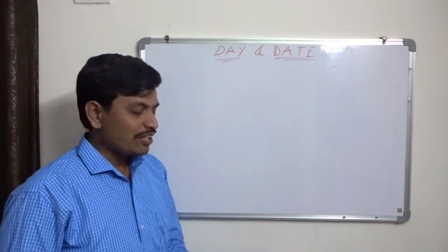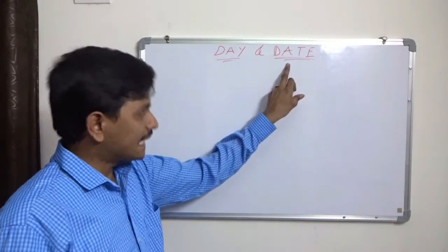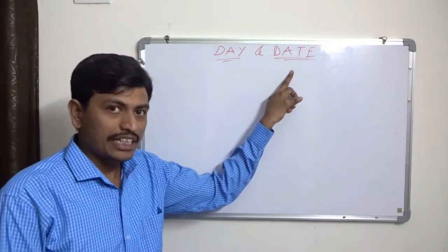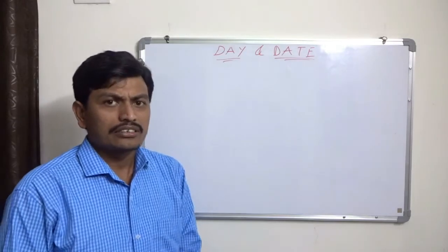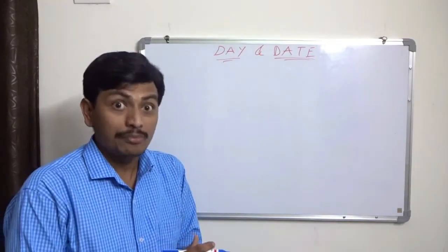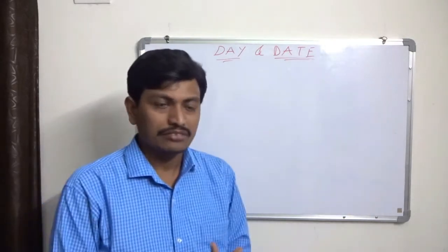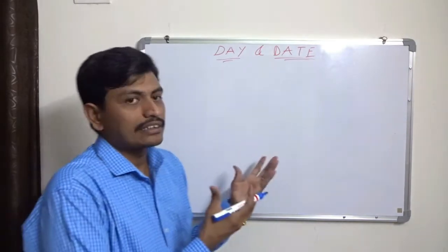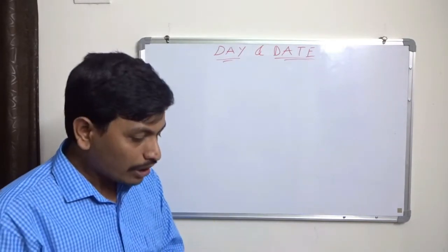Hi everyone, today we are going to learn about day and date — that is, we can find any day of any date. For example, what day falls on our Independence Day, that is 15th August 1947? I can say this falls on Friday. So how do we find this?